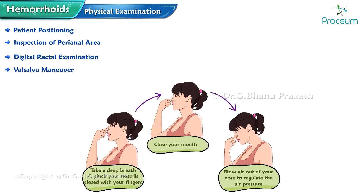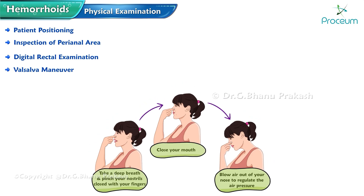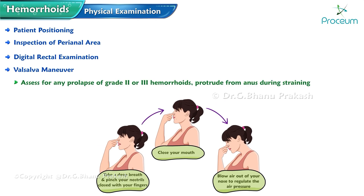The patient is asked to perform the Valsalva maneuver, which involves bearing down as if having a bowel movement. This maneuver helps assess for any prolapse of grade 2 or 3 hemorrhoids that may protrude from the anus during straining and also helps evaluate the rectal mucosa for signs of prolapse.